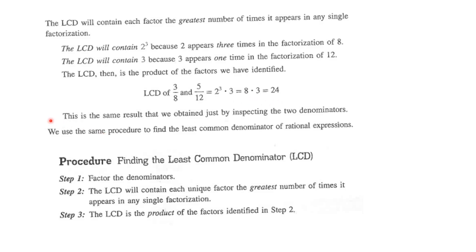This is the same result we obtained previously by inspecting the two denominators. Now, this is the same procedure we're going to use to find the least common denominator of rational expressions. We're going to factor the denominators completely. The LCD will contain each unique factor the greatest number of times it appears in any single factorization, and the LCD is the product of those identified factors.